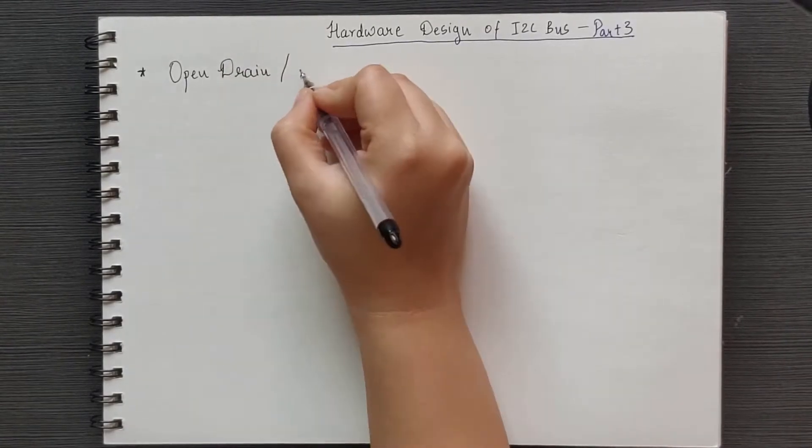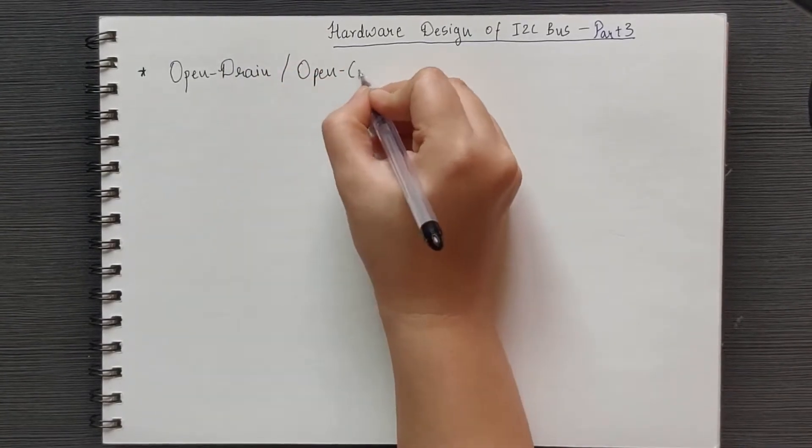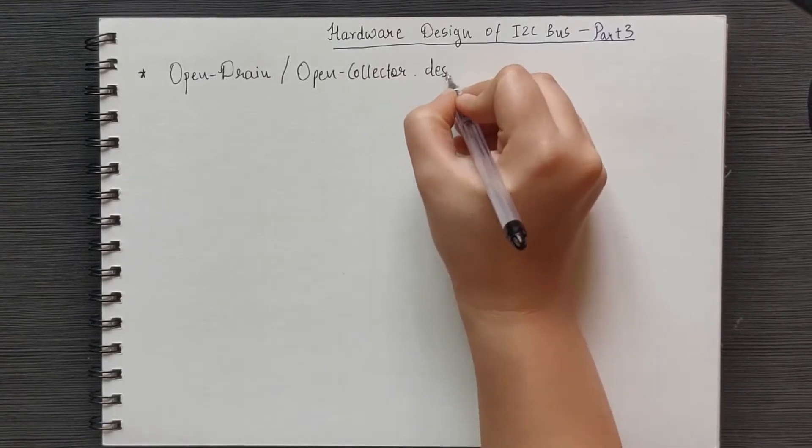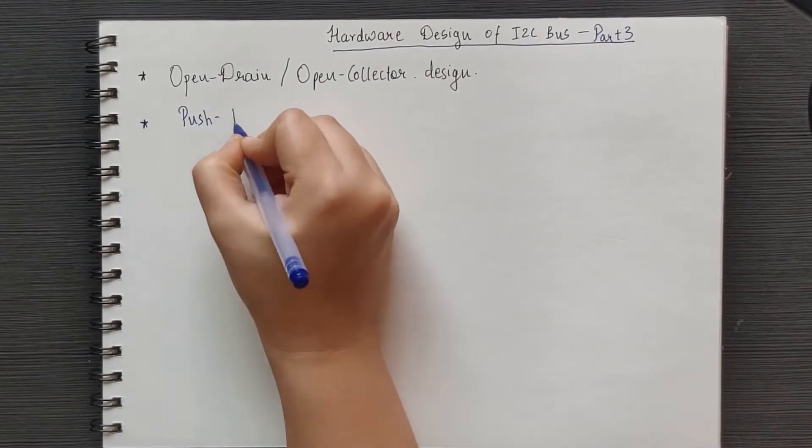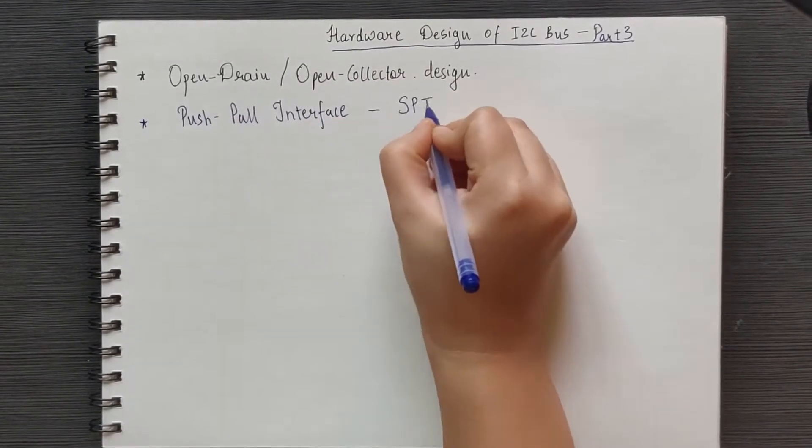I2C uses an open drain or open collector design. To understand this, let's look at the push-pull interface which is used in SPI.